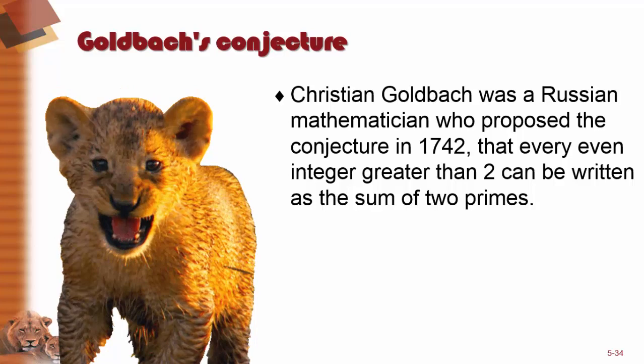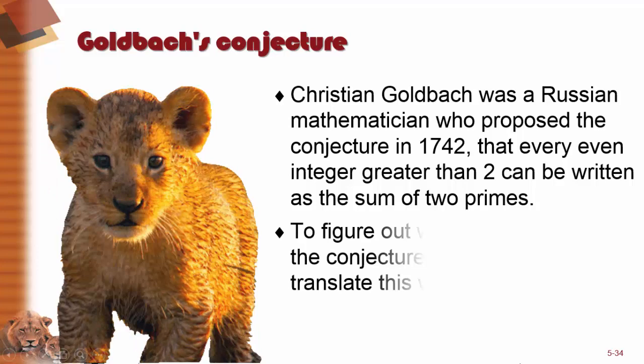Goldbach's Conjecture. Christian Goldbach was a Russian mathematician who proposed the conjecture in 1742 that every even integer greater than 2 can be written as the sum of two primes.